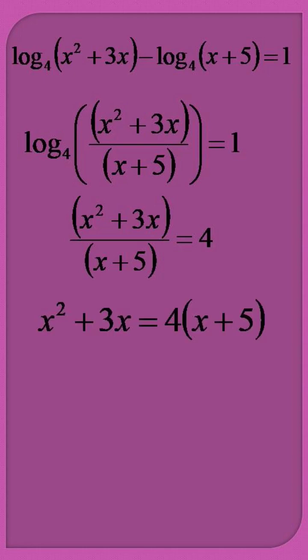Cross multiplication gives x squared plus 3x is equal to 4 into x plus 5, which can be rearranged to a quadratic equation as x squared minus x minus 20 is equal to 0.